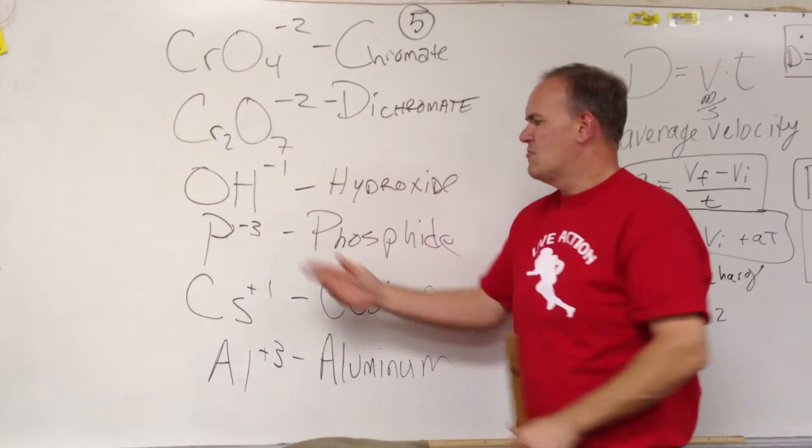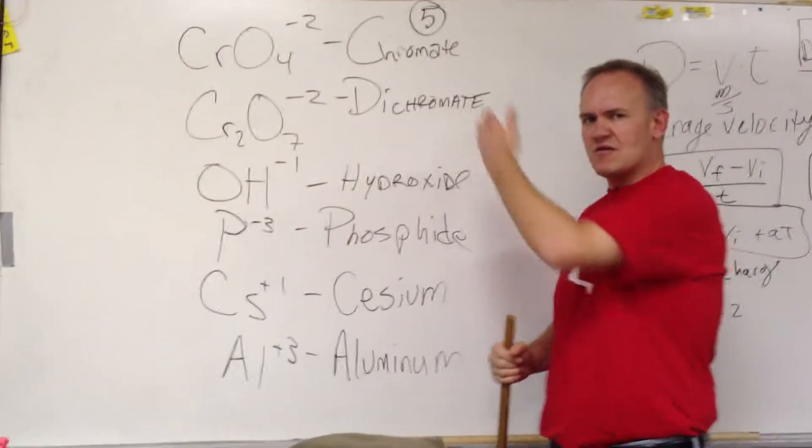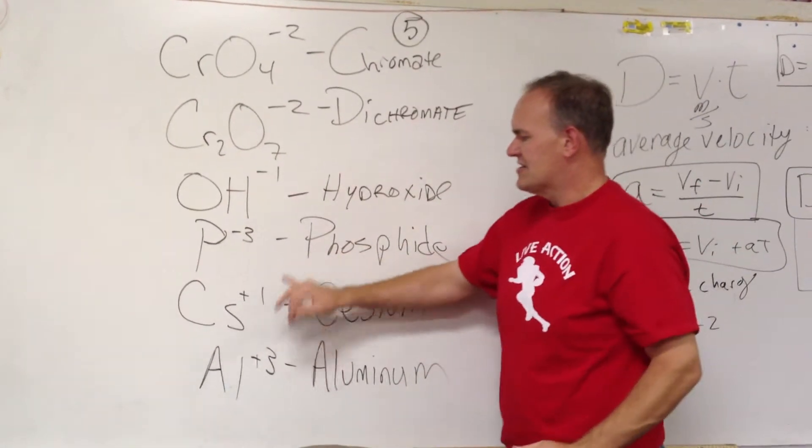Where does the negative 3 come from? Remember the column. It's in the negative 3 column, same as nitride and arsenide.